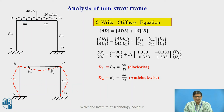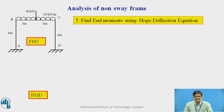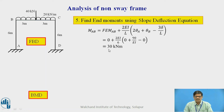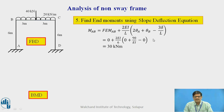Once we obtain the deformations, the next step is to find the end moments using slope deflection equations, converting rotations to moments. For example, MAB = FEMAB + (2EI/L)(2θA + θB − 3δ/L). FEMAB is 0, theta A is 0, the length of member AB is 6 m, and theta B = 90/EI (clockwise, taken as positive). There is no sway, so delta is 0. Therefore, MAB works out to 30 kN·m.